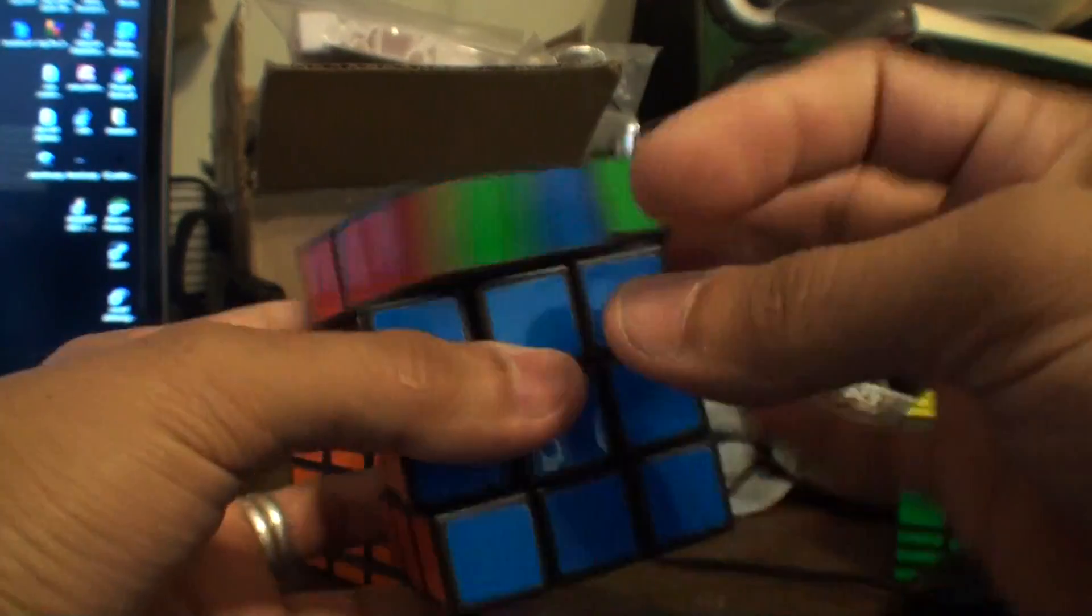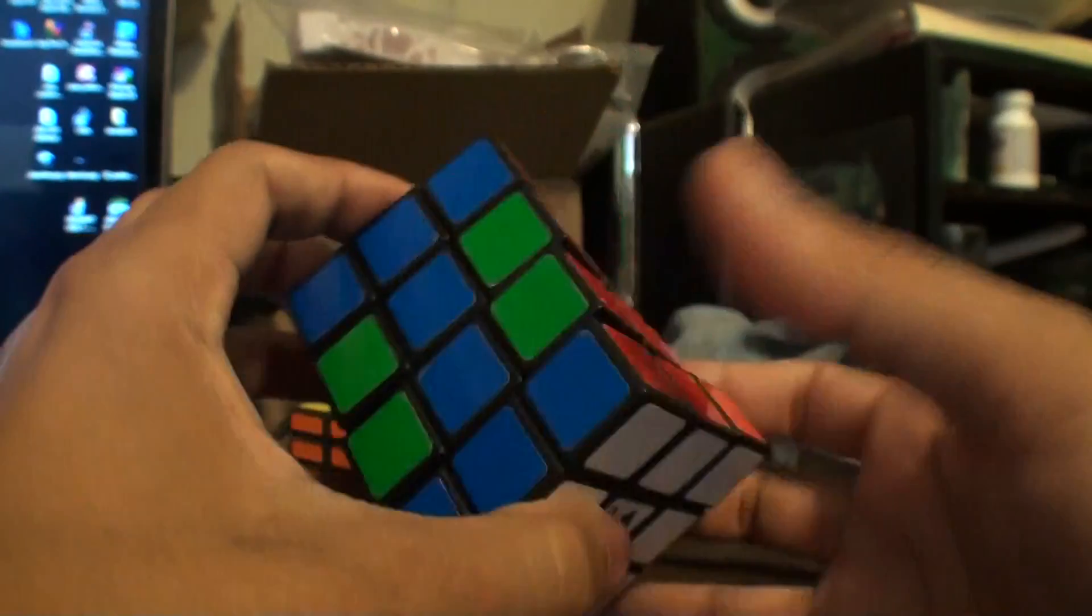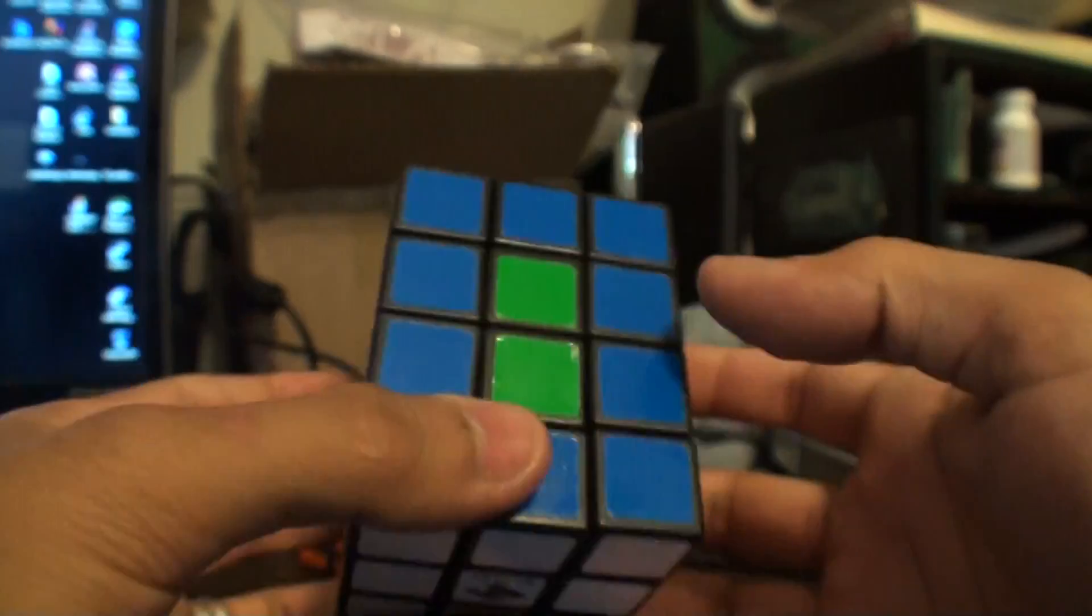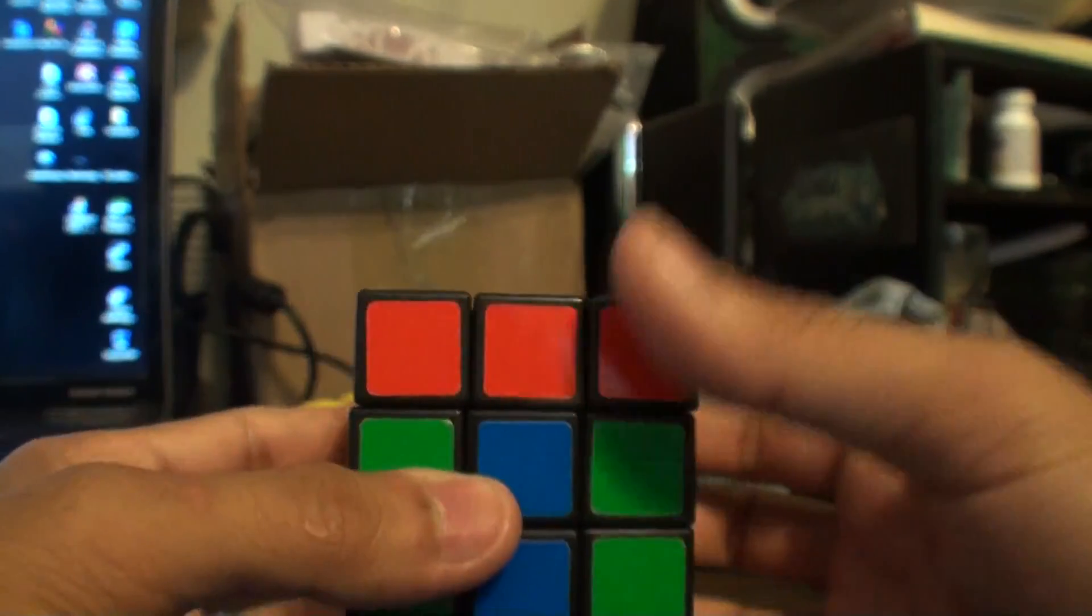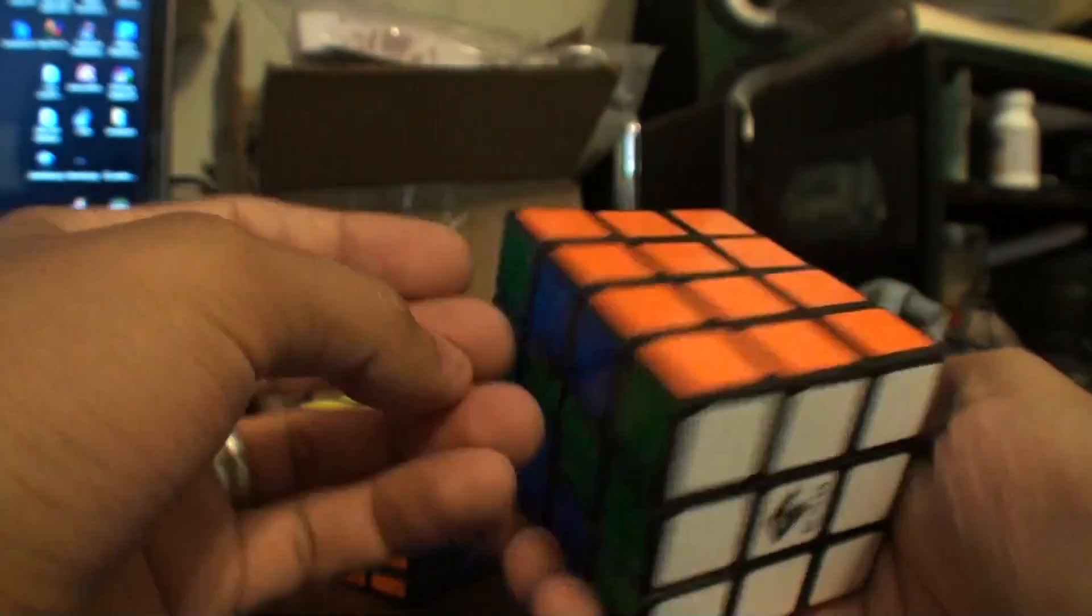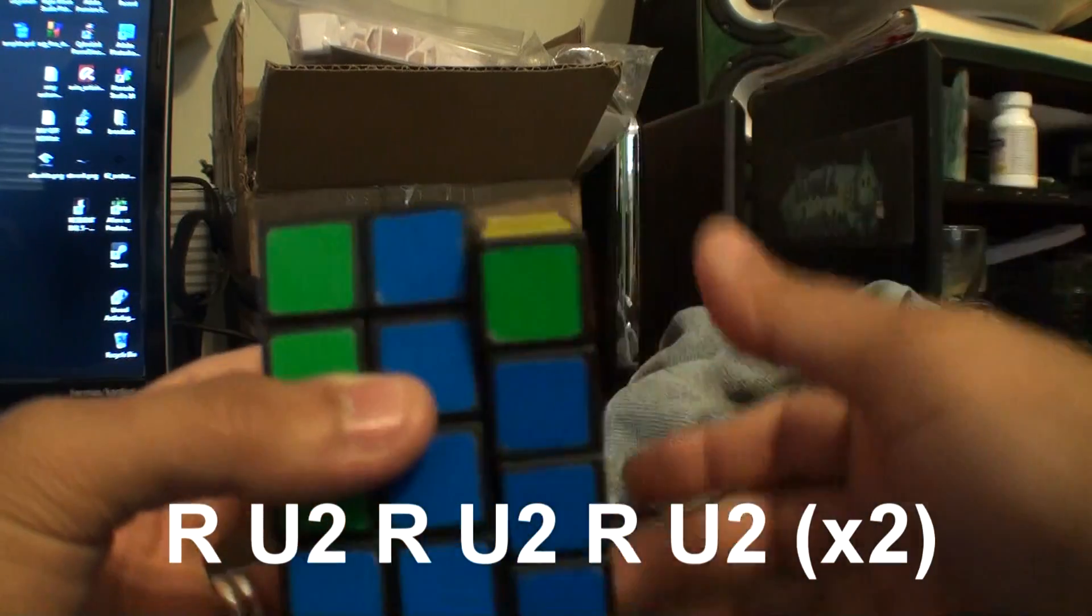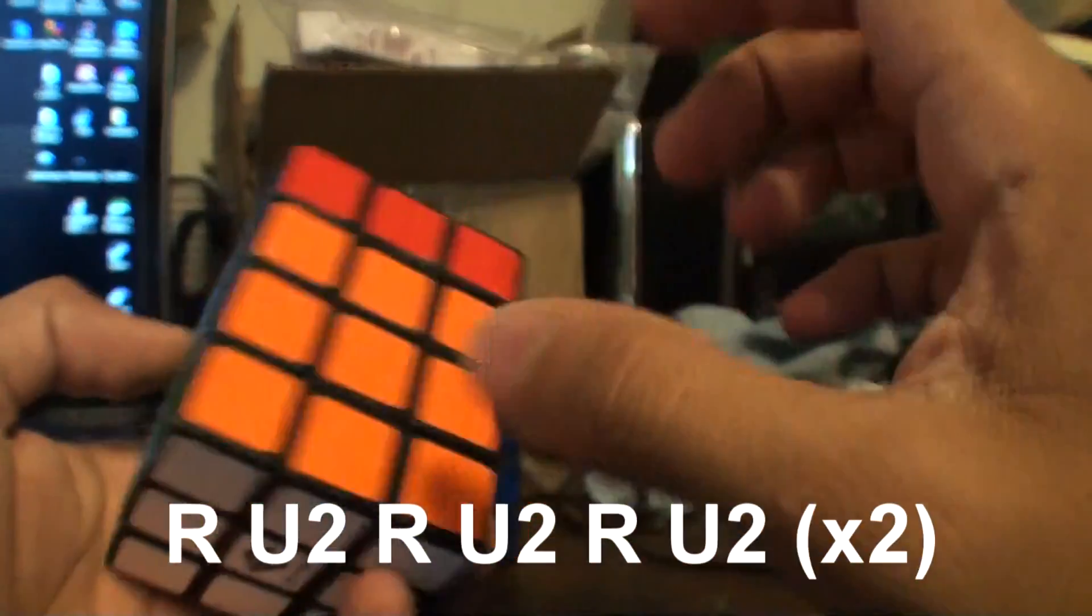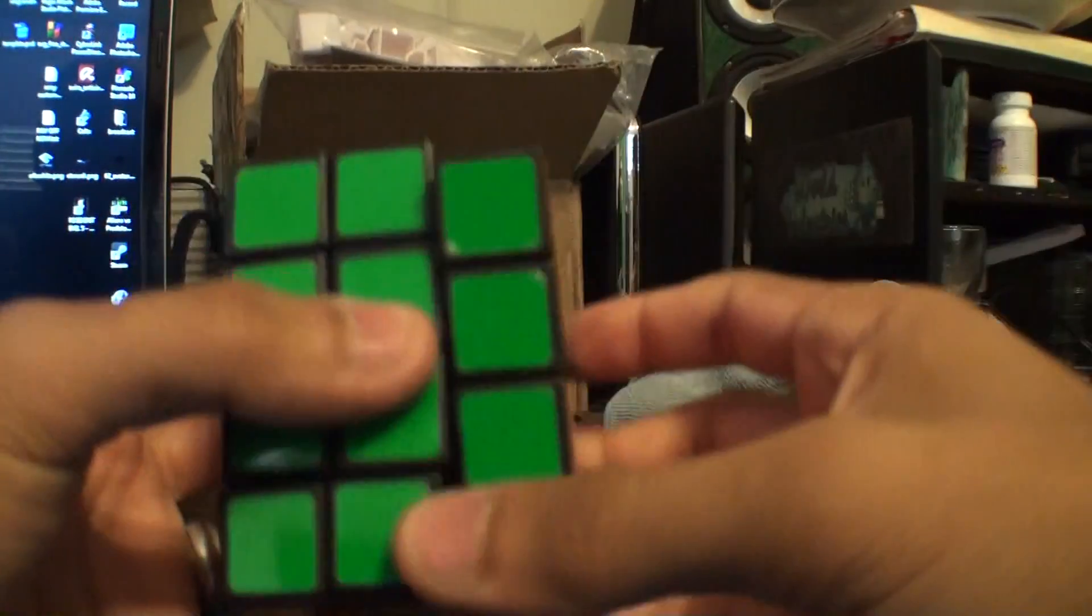And then another case that you guys will probably run into is this right here where everything is solved except these ones are reversed. So yeah, say you're with this and you had only these two that need to be solved, which means this block right here and then this block.